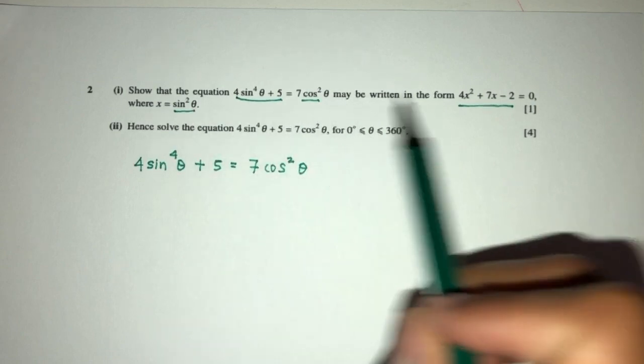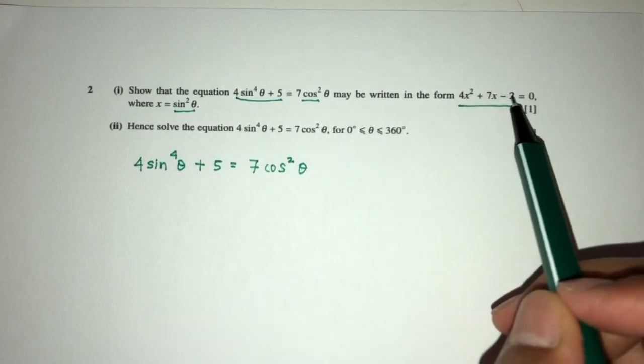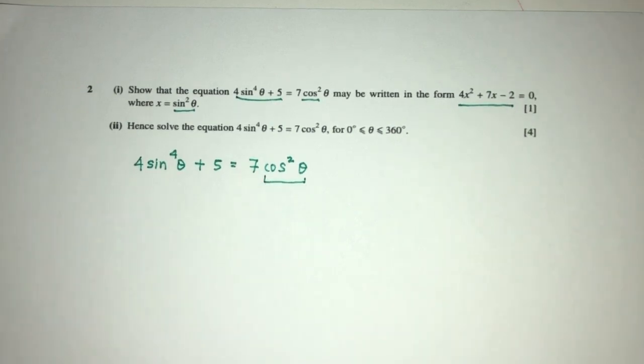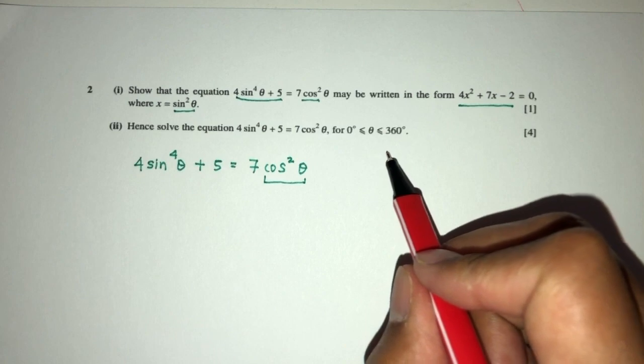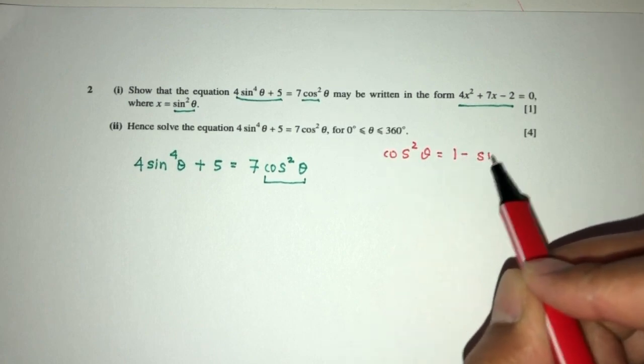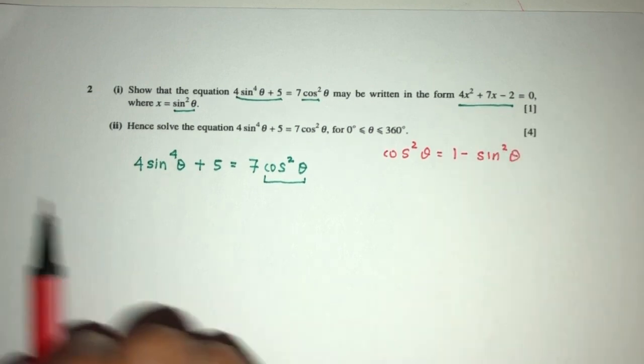Now we don't have any cosθ in this equation so we have to eliminate this in a way. Now how can we do this? We realize that cos²θ is also equal to 1 - sin²θ. So we have to know this.